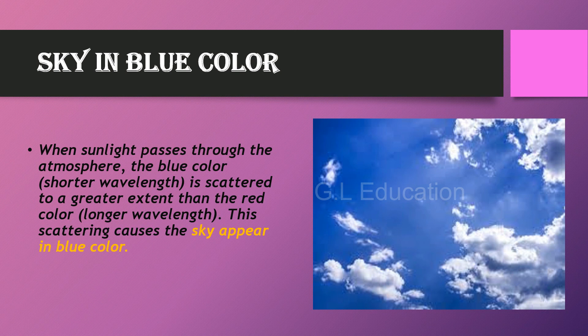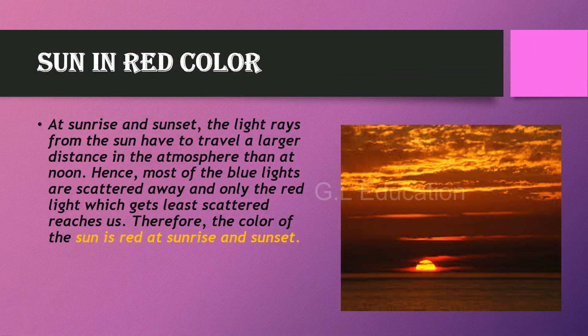When sunlight passes through the atmosphere, the blue color, which has a shorter wavelength, is scattered to a greater extent than the red color, which has a longer wavelength. This is why the sky appears blue, and it will appear red at sunrise and sunset.